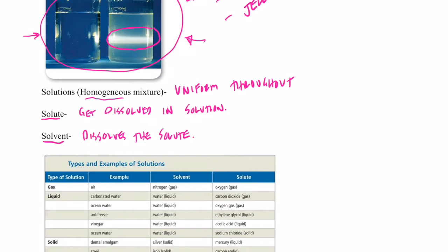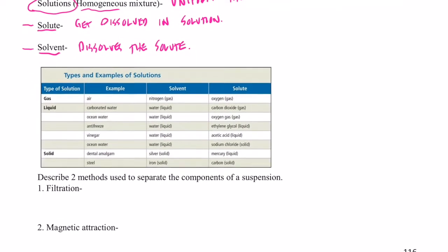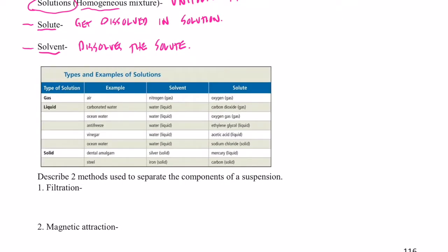Another example might be toenail polish remover. Acetone, toenail polish remover, would be my solvent because it dissolves the solute, toenail polish. You guys okay with those two terms? So solutions are made up of solutes and solvents. Now, a couple of examples of solutions that I was telling you about. They don't always have to be something dissolved in water.